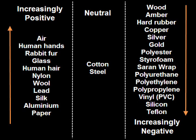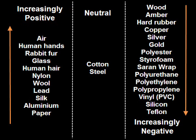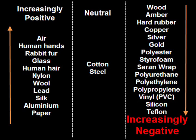The further the separation in the series, the greater the induced charge. If both materials in contact are from the positive side of the triboelectric series, the material with the greater ability to generate charge will become positive. For example, when we rub our hands against silk, our hands will become positive whereas the silk will become negative. Similarly, if both materials are from the negative end of the triboelectric series, the one with the greater ability to attract electrons will become negatively charged.